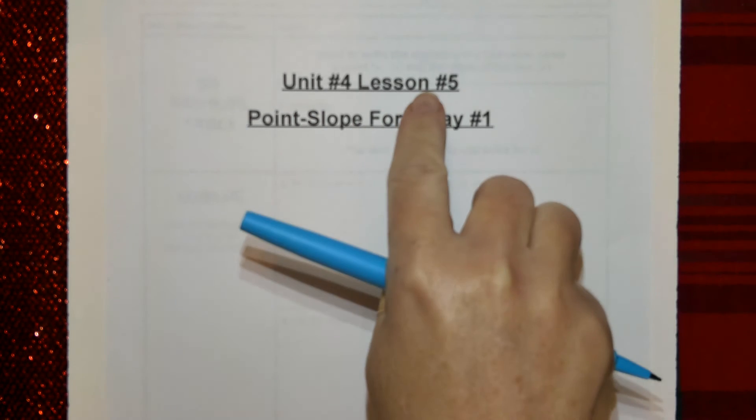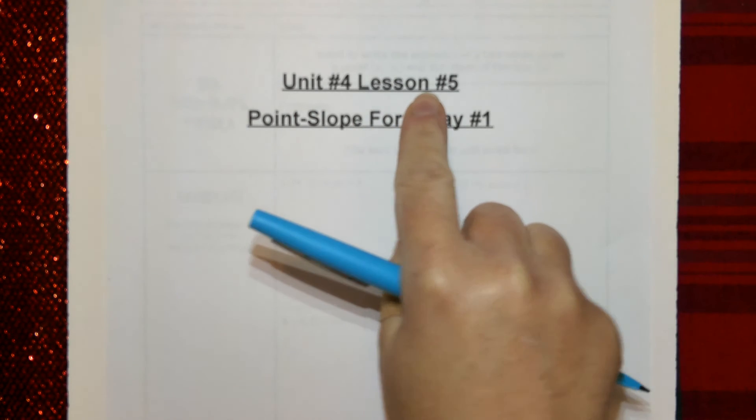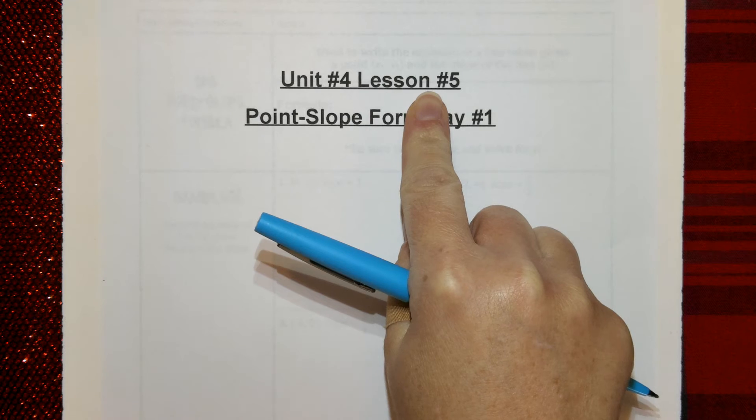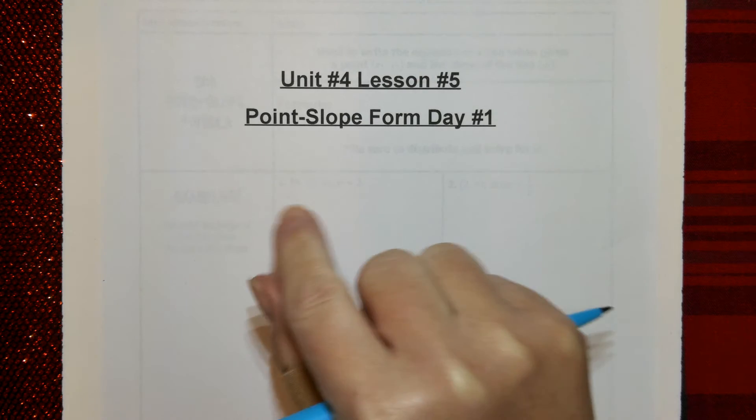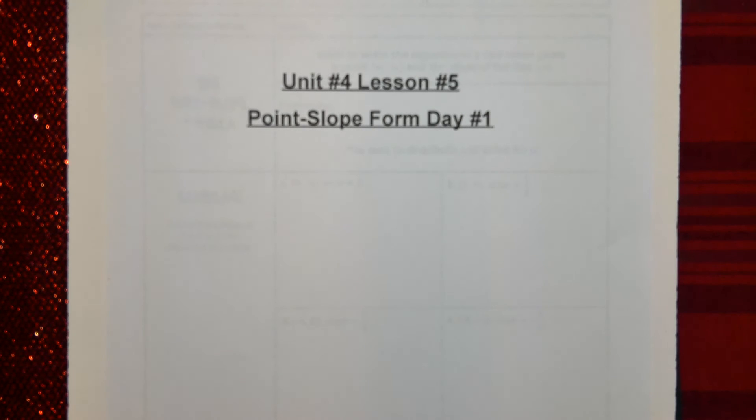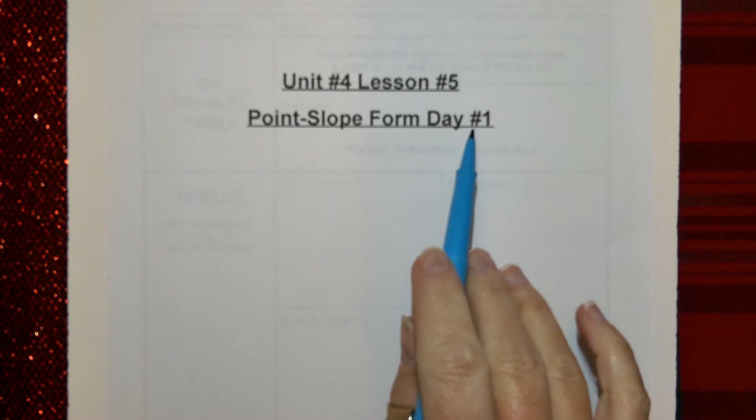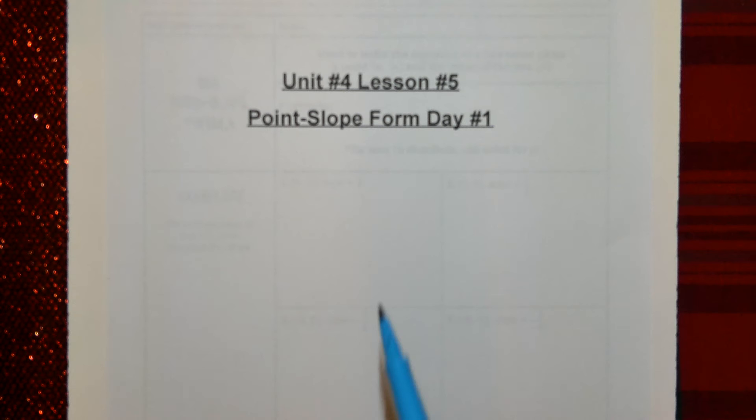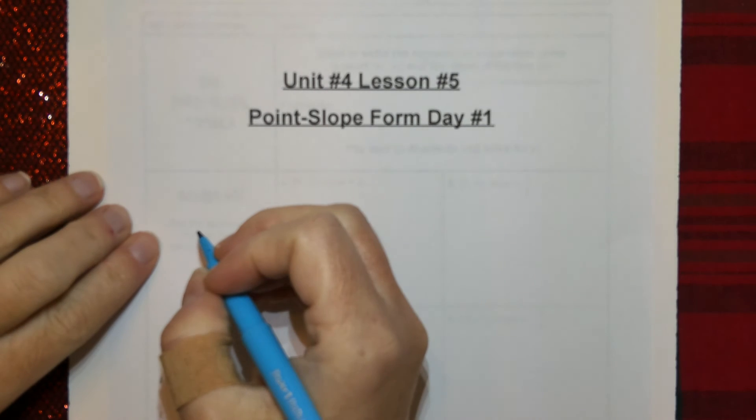We are still working in unit four. We are on now to lesson five. You probably don't recall this, but right before winter break, the very last thing we did in this class was take a quiz. So we're beyond a quiz now and we are still moving on in unit four. And I'm going to teach you a new way to write a linear equation today. This is the third and final way and it's called point slope form. Notice it says day one on here. That's because this is a two day lesson.